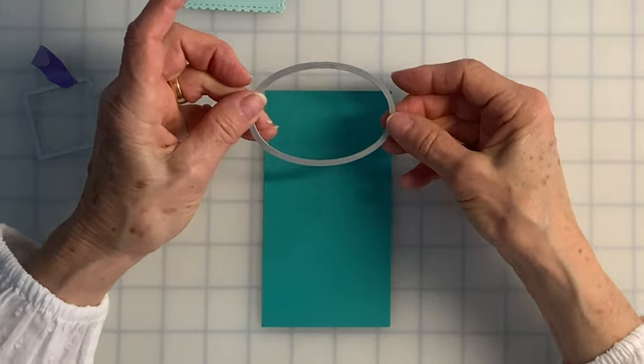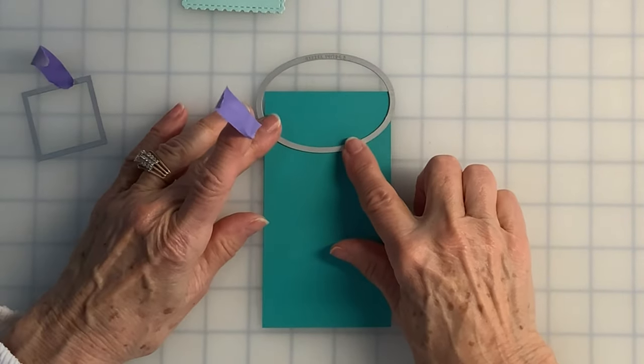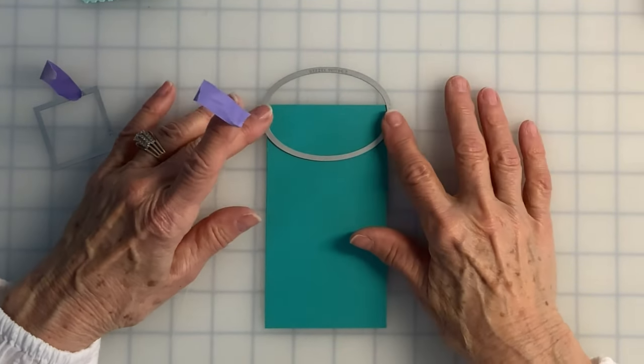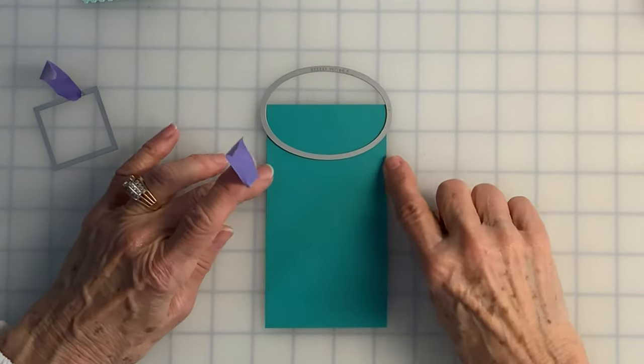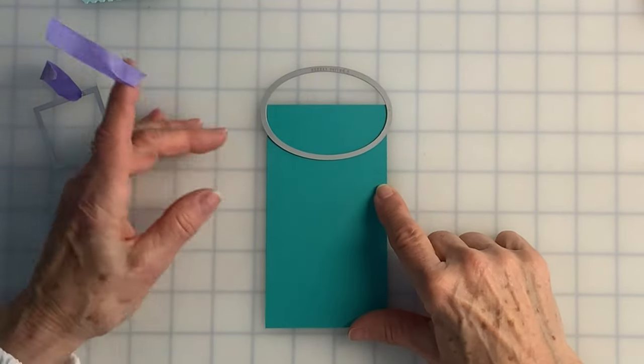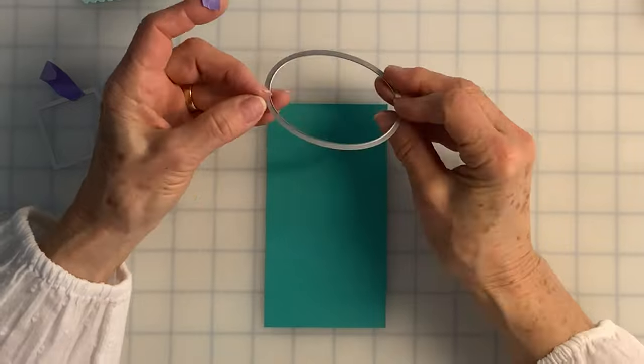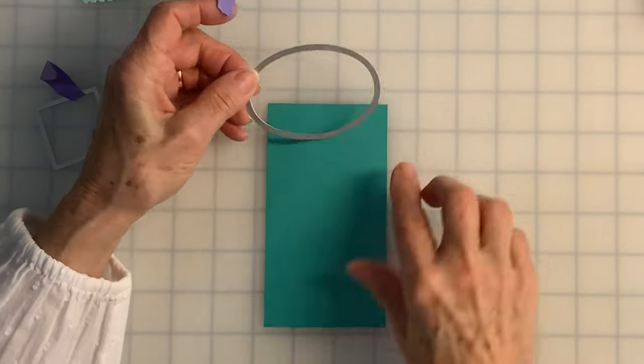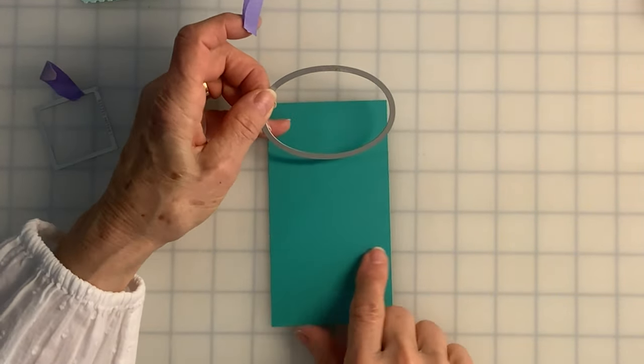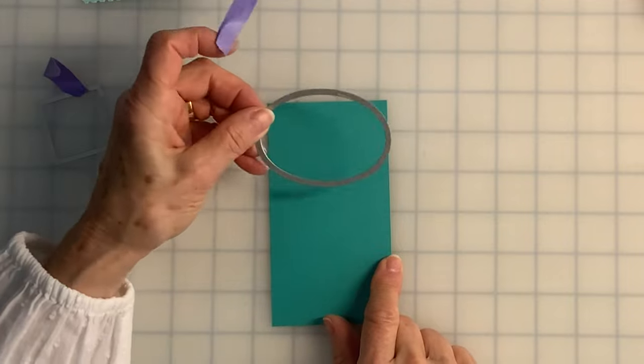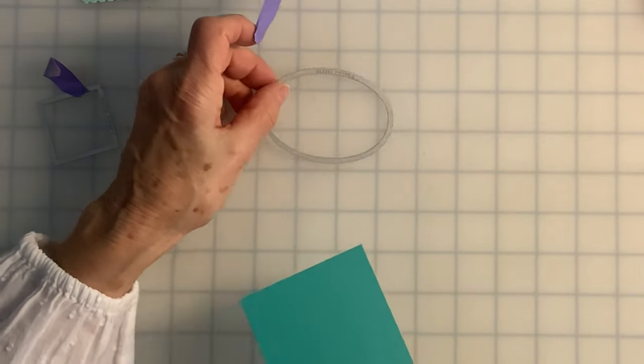When choosing your oval die, you want your oval die to be as close to the size of your cardstock as possible. So if your die is 2 and 7/8 or 3 and 1/8, 3 and 1/4, you can adjust the size, the width, of this piece of cardstock to fit your oval die.